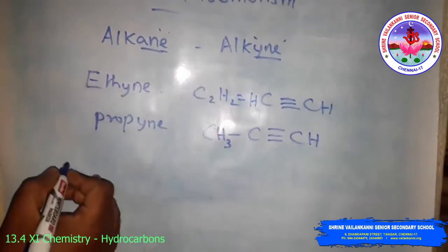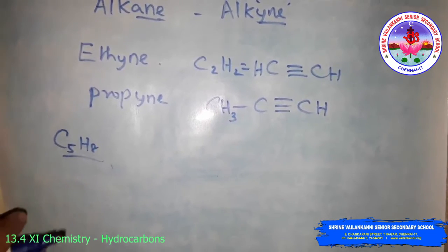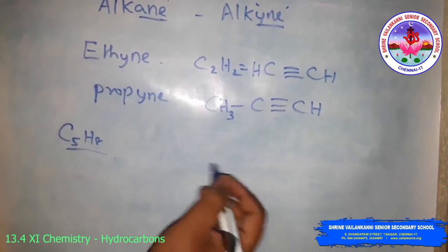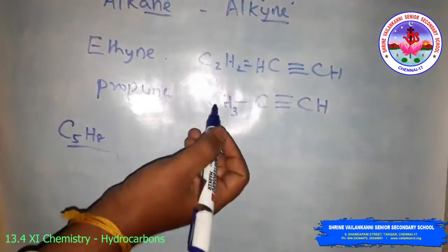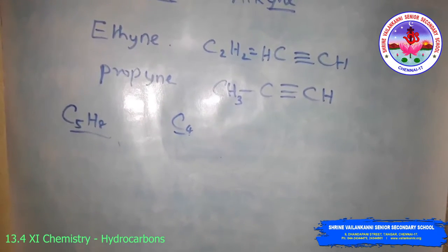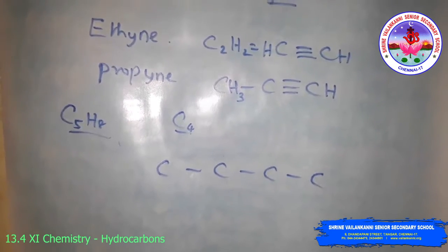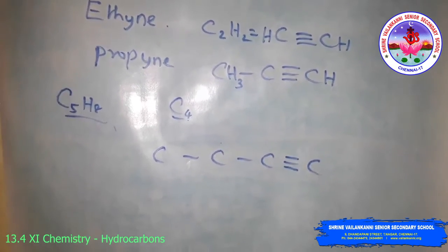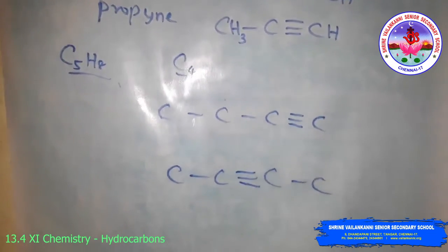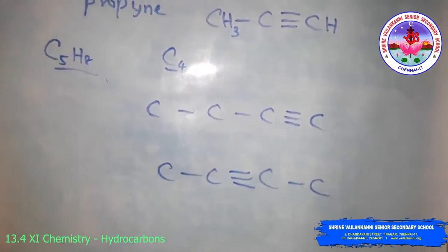Suppose if we have carbon number 4, what are the possible arrangements of the structure? There are two possibilities. If I draw 4 carbon atoms, the first position can have one triple bond, and the second position can also have one triple bond. So carbon number 4 has two possible arrangements.